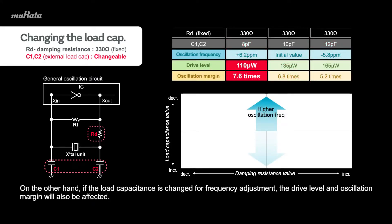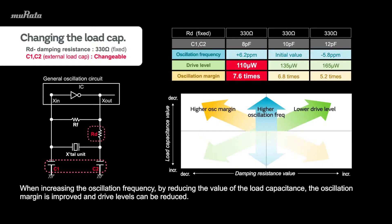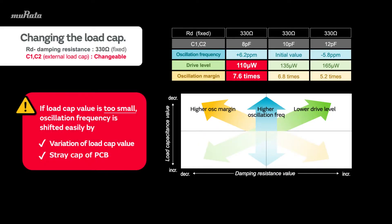On the other hand, if the load capacitance is changed for frequency adjustment, the drive level and oscillation margin will also be affected. When increasing the oscillation frequency by reducing the value of the load capacitance, the oscillation margin is improved and drive levels can be reduced. However, if the load capacitance is too small, minor effects can cause frequency fluctuation and require attention.